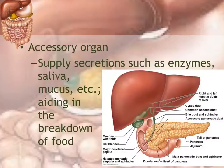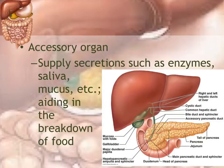The other group is the accessory organs. These are organs responsible for producing chemicals or structures that aid in the breakdown of food. They include organs like the liver, the pancreas, all of the salivary glands, and even teeth, which are considered accessory organs.